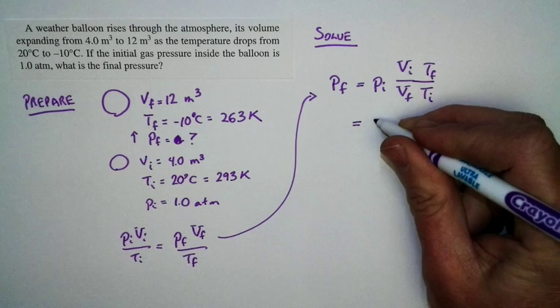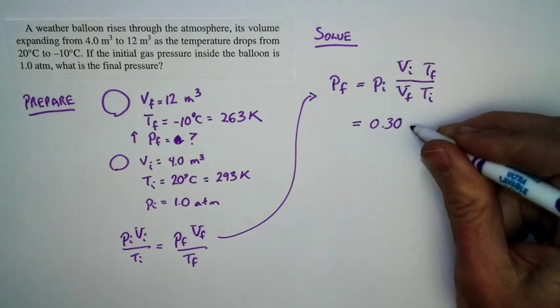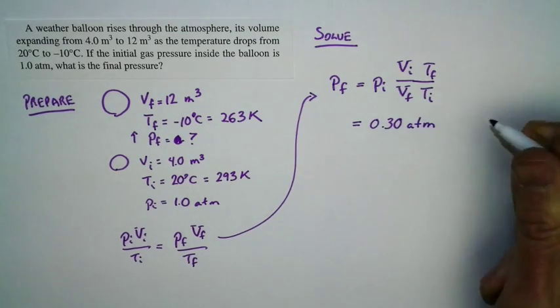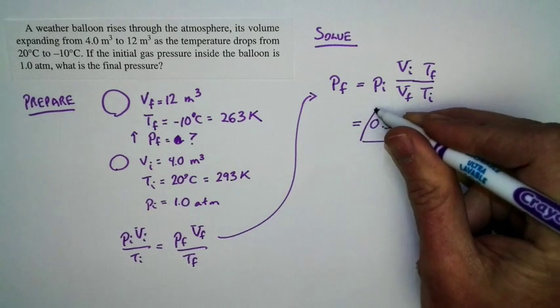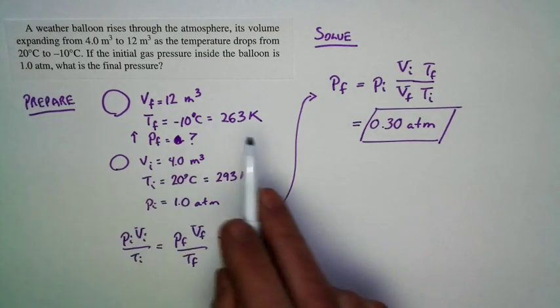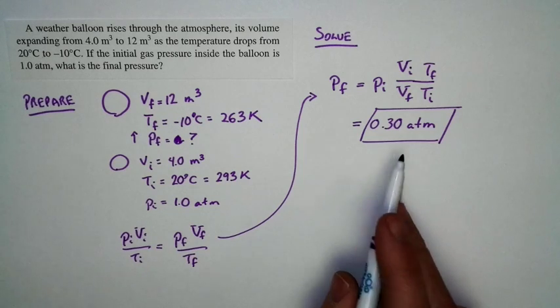And if I do that, here's what I get. I get 0.30 atmospheres. And we can stay with that because the pressure was given in atmospheres at the start, and we're going to return it in the same units.